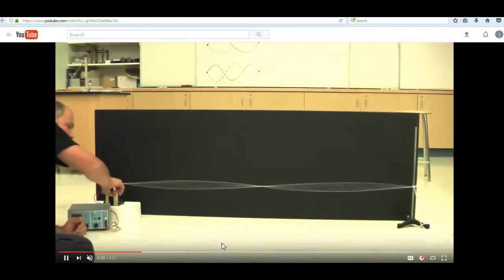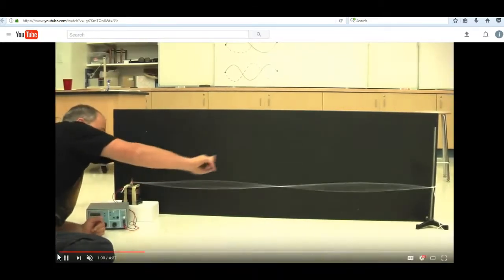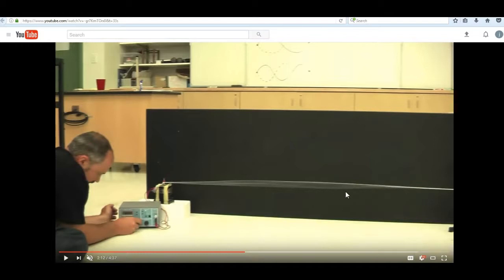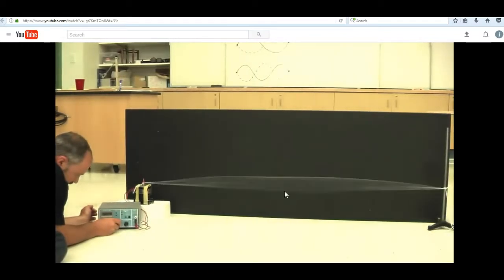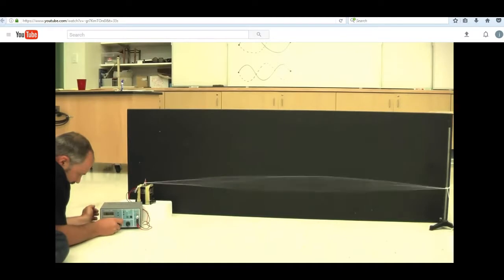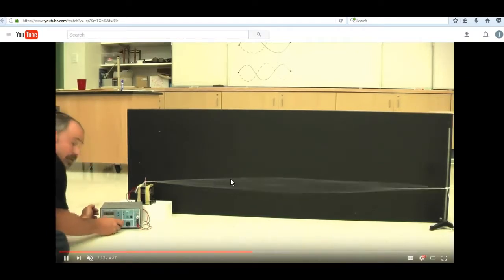And look, the string is going up and down like a standing wave. But we can make the string vibrate with different frequencies. So this is a longer wavelength because all we see is half of a wave going up and down.